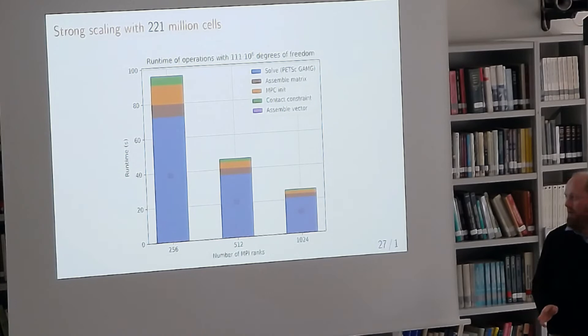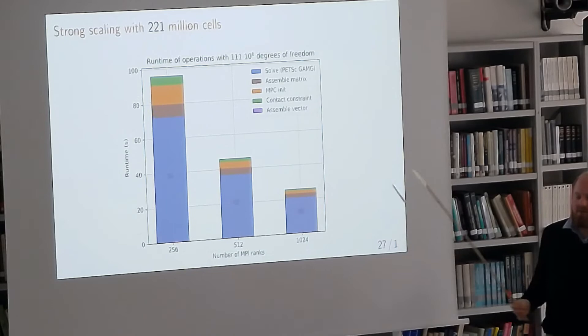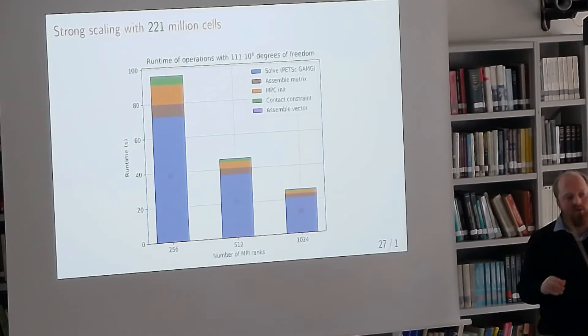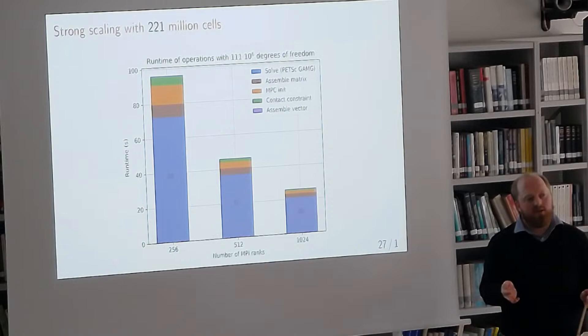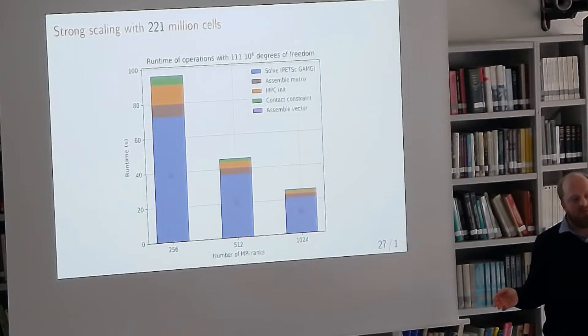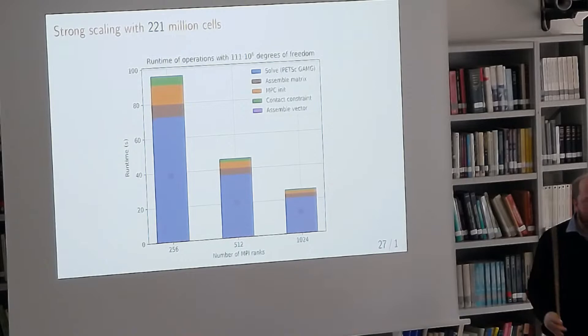Algebraic multigrid should not be treated as a black box, because there are many parameters to tune for proper scaling. With some tuning it works quite well. Initializing the MPC scales really well because we use MPI neighborhood communicators to set up communication, so there's never any global communication to figure out which degrees of freedom are constrained. Setting up the contact constraint also scales well with increasing number of processes. Assembling the vector contribution is so small it's not even visible in the timing breakdown.